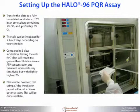The cells can be incubated for five, six, or seven days depending on your schedule. Compared to five days of incubation, leaving the cells for seven days will result in a greater than three-fold increase in ATP concentration and therefore increased assay sensitivity, but with slightly higher coefficients of variation, or CVs. Please note, however, that using a seven-day incubation period will also result in lower potency ratios. This will be discussed later.